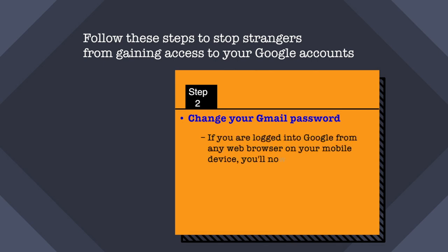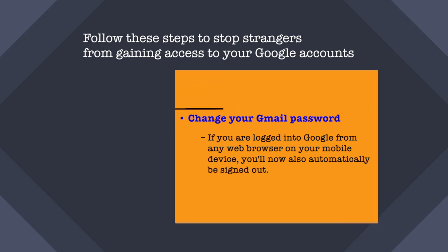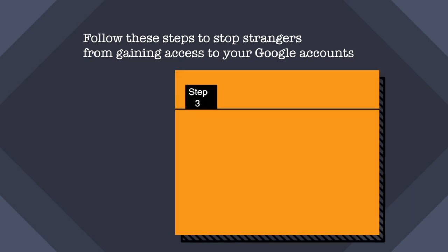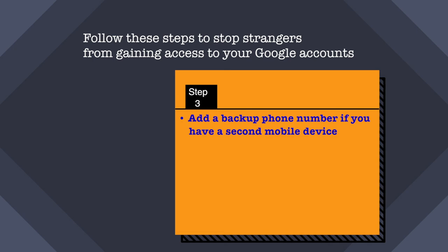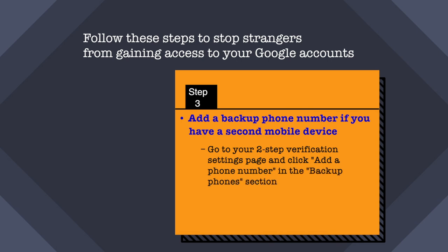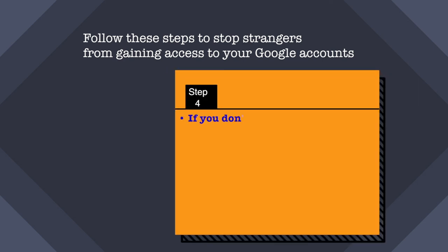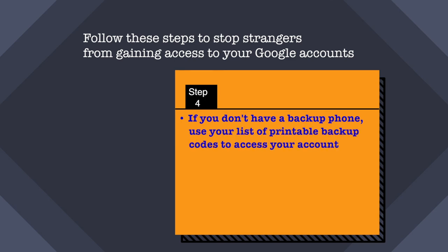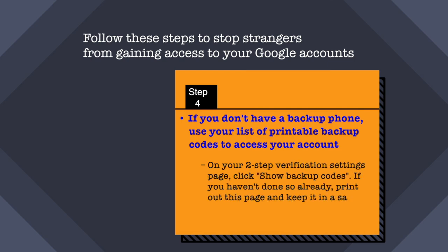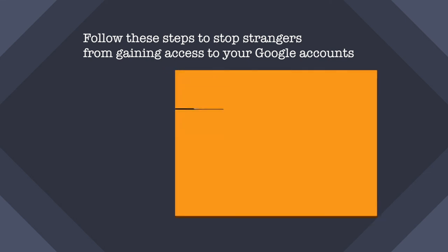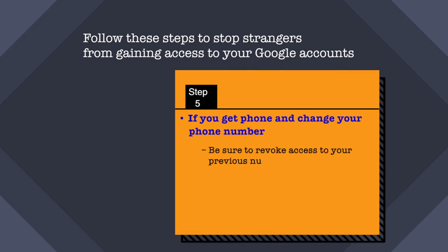The third step: add a backup phone number if you have a second mobile device. Go to your two-step verification settings page and click 'Add a phone number' in the backup phone section. Even if you don't have a backup phone, use your list of printable backup codes to access your account. You can go to your two-step verification settings, show backup codes, keep them in a safe place, and use those codes to access Gmail if you've lost your phone. If you get a new phone and change your number, be sure to revoke access to your previous number on the two-step verification page.